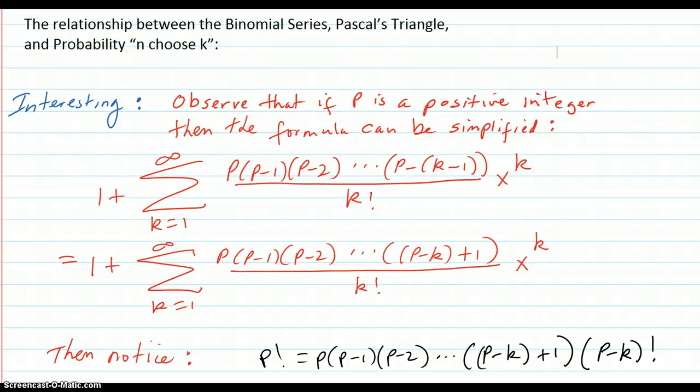Here we see the relationship between the binomial series, Pascal's triangle, and in probability, the n choose k process.